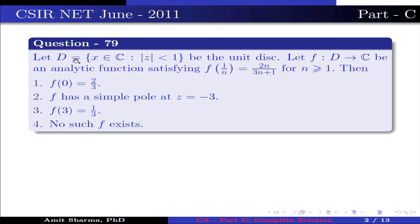Question number 79. Let D equal to {z belongs to complex numbers C such that |z| < 1} be the unit disk. Let f from D to C be an analytic function satisfying f(1/n) = 2n/(3n+1) for n ≥ 1. Then: option 1, f(0) = 2/3; option 2, f has a simple pole at z = -3; option 3, f(3) = 1/3; option 4, no such f exists.